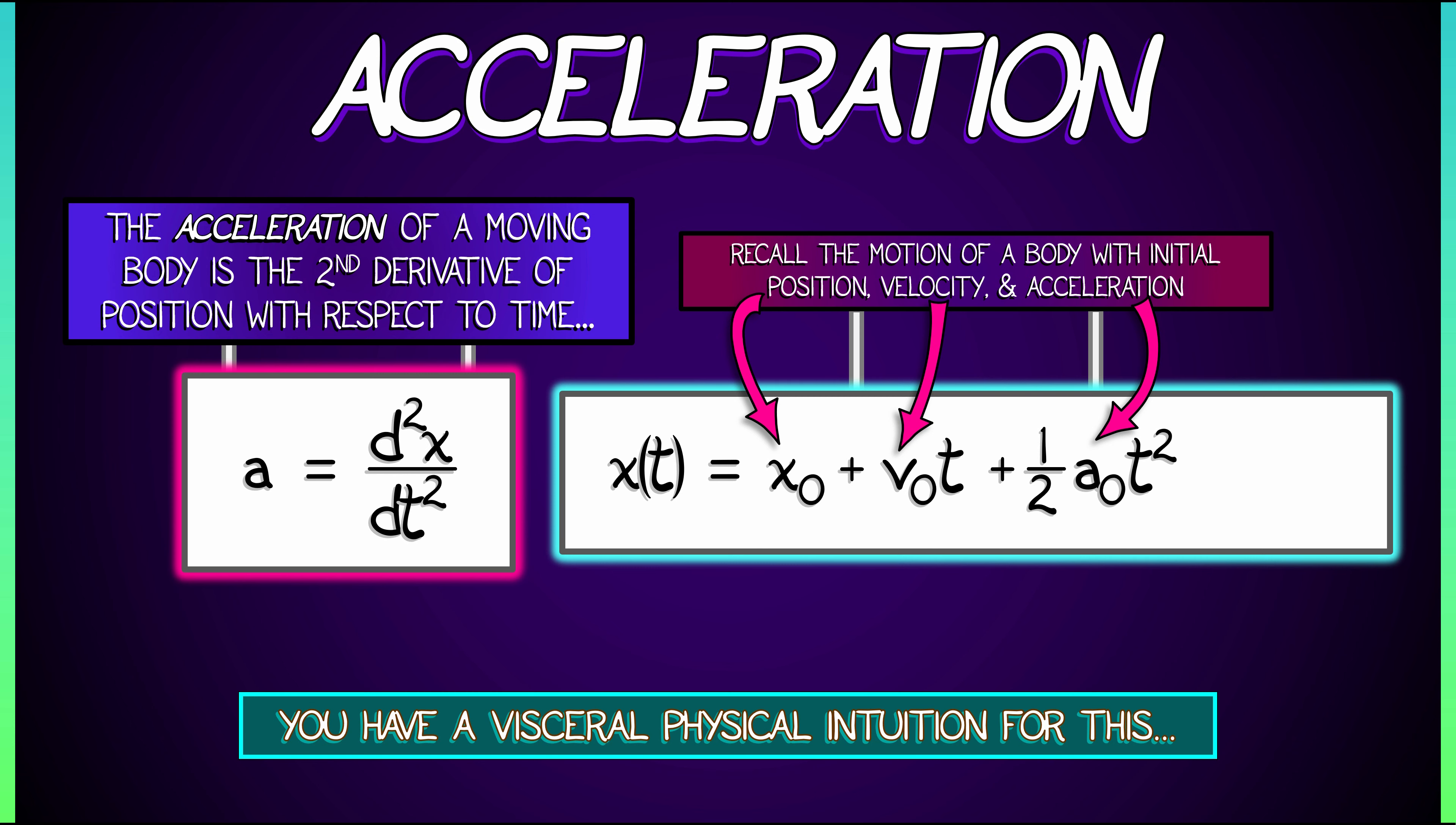Now, often in physics class, we assume acceleration is constant, but what if it's not? Well, then, we have, for small values of t, some higher order terms, which are not that significant. We can put them all in a big O, t cubed, trash can.